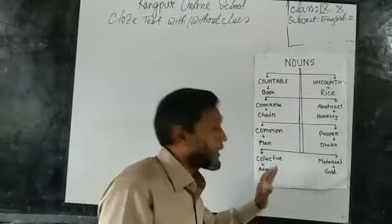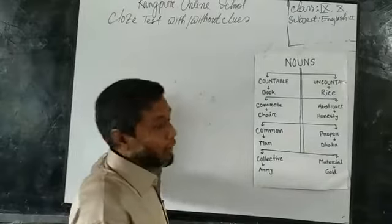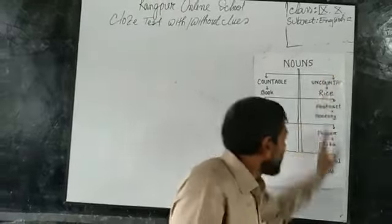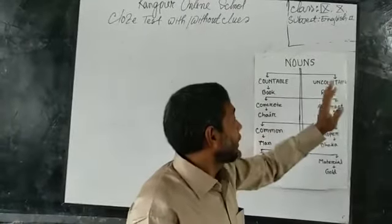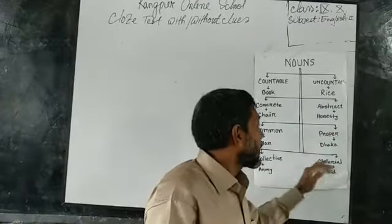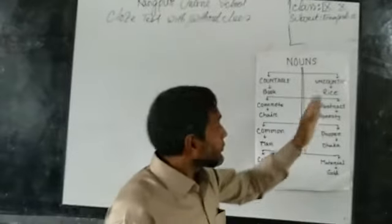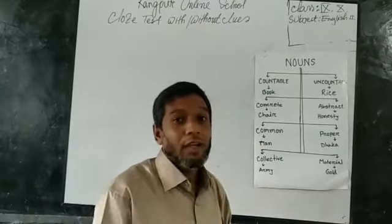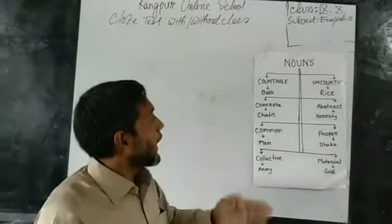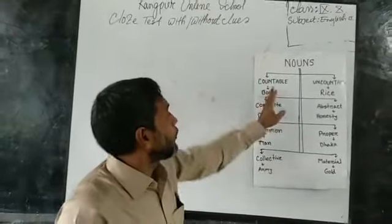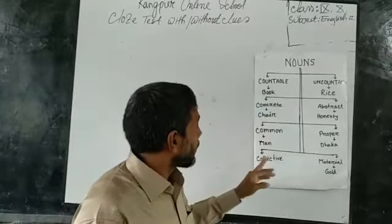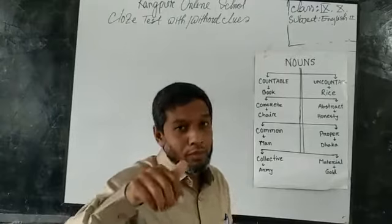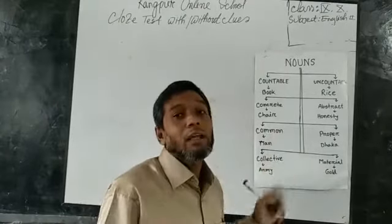These four nouns — countable, concrete, common, and collective — have the same characteristics. Their usage in the sentence is the same. And again, these four nouns — uncountable, abstract, proper, and material nouns — they have the same types of usage in a sentence. What I want to tell you is: countable, concrete, common, and collective nouns — they have two forms. They have both singular and plural forms.